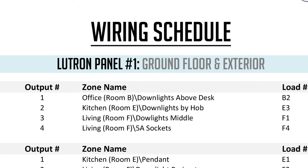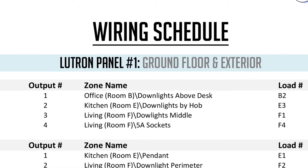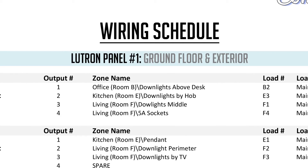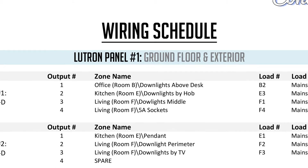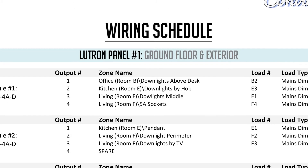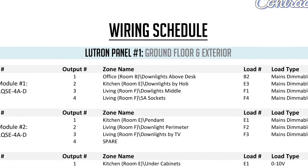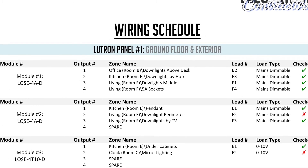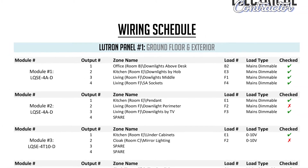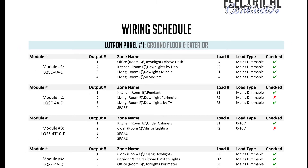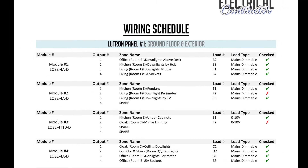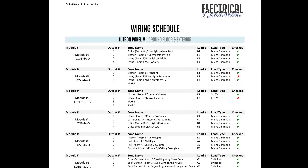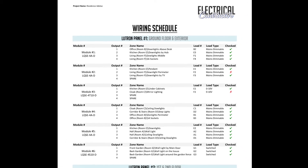The wiring schedule is generally provided by the person who has designed the Lutron system we are about to commission. That wiring schedule will then be supplied to the electrical contractor, for example, for them to complete the wiring of the Lutron panel. So this document already exists — we're not asking somebody to do extra work for us. That's why it should be easy to get as long as we ask for it.